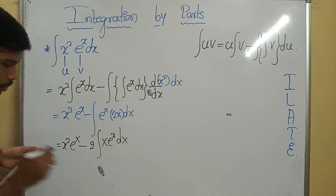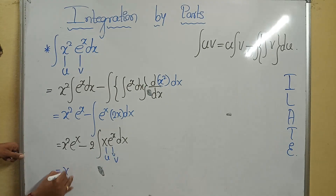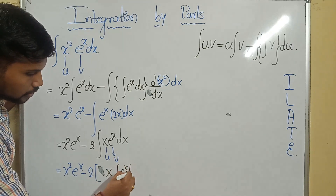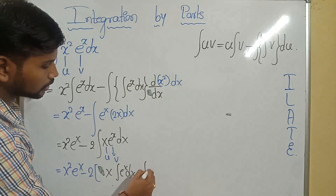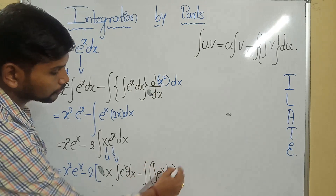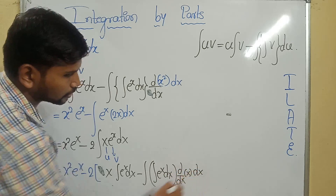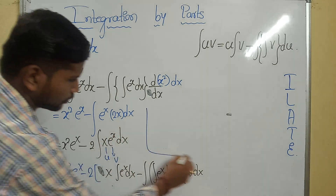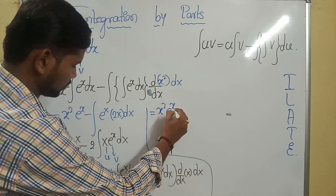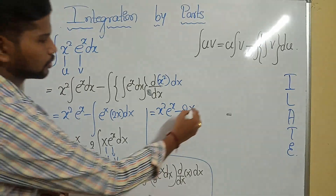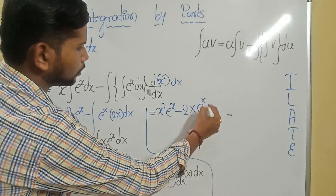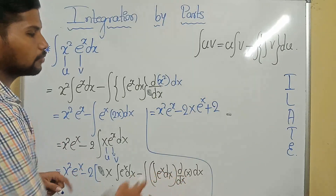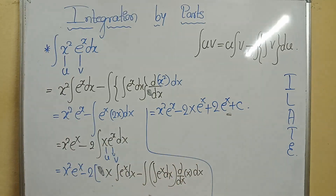I need to apply integration by parts again on integral of x·eˣ: x is u, eˣ is v. It will be x²·eˣ minus 2 times [x times integral of eˣ dx minus integral of eˣ dx times d/dx(x) dx]. This simplifies to x²·eˣ minus 2x·eˣ, and minus into minus gives plus 2·eˣ, plus c. We got the required result.